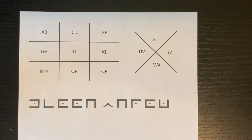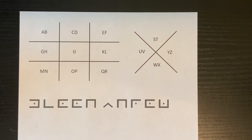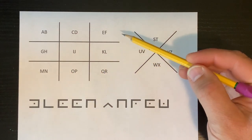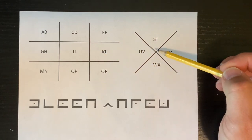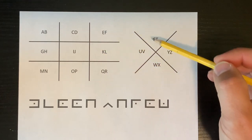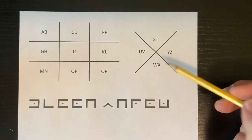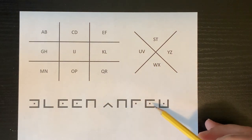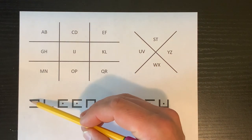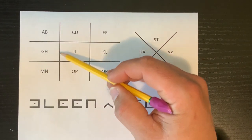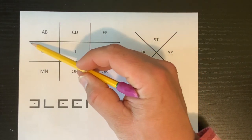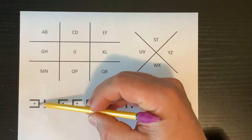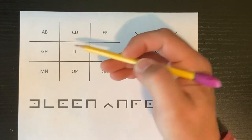Here's how it works. Start by observing the key. Notice that the alphabet is divided between two shapes, and each section of each shape contains two letters. Next, compare the symbols of your message. Notice that the first symbol has the same shape as the section containing the letters G and H. This means this symbol represents one of these two letters.